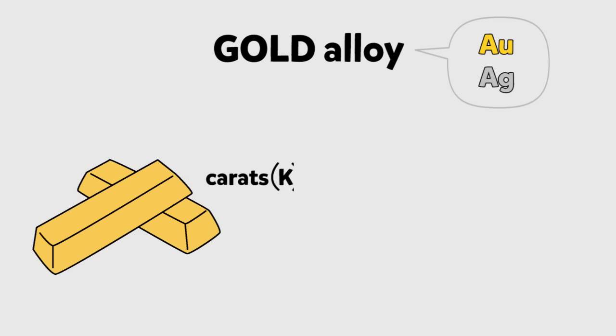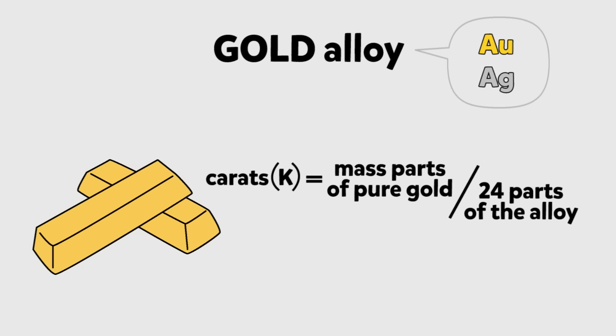The number of carats defines how many mass parts of pure gold are found in 24 parts of the alloy.